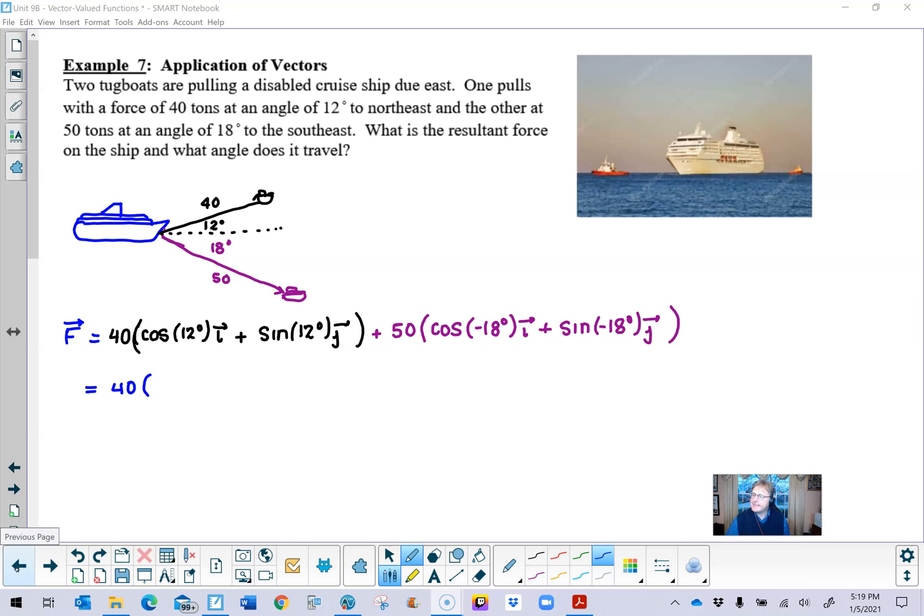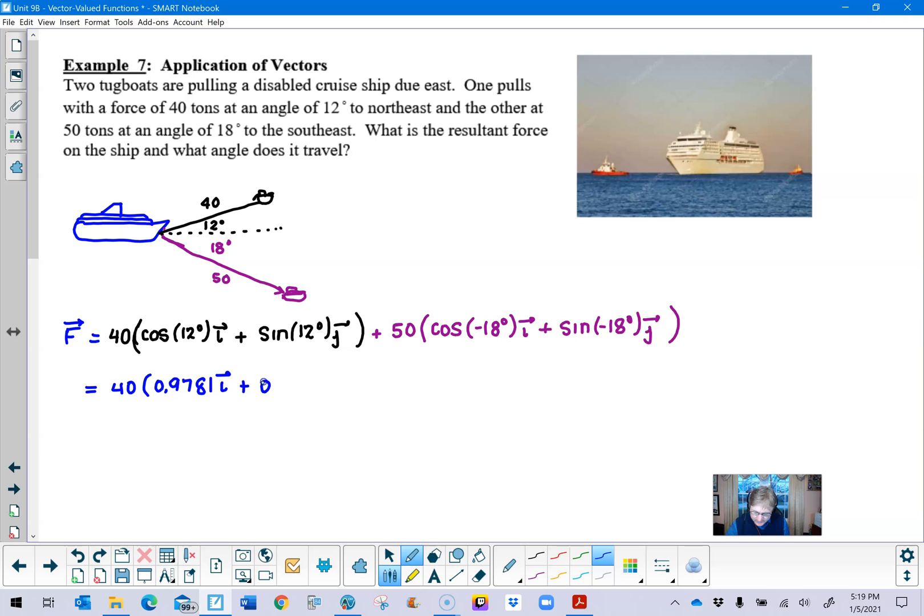So what we've got now after we do our calculations with our TI-Inspire is 0.9781 multiplied by i, the sine of 12 degrees is 0.2079 multiplied by vector j. And then when we do the same thing over here, cosine of negative 18 is 0.9511 multiplied by i and then for the sine of negative 18 you actually get a negative result so I'm just going to use the negative as the sine in between the two components.